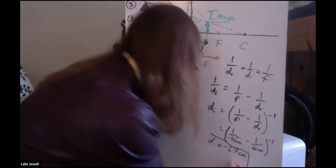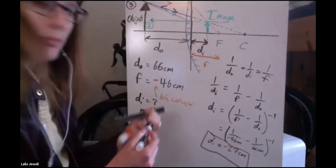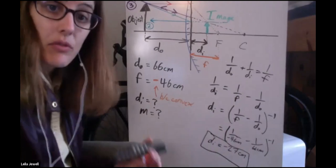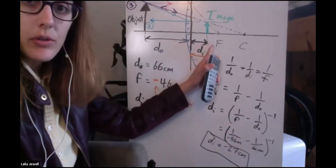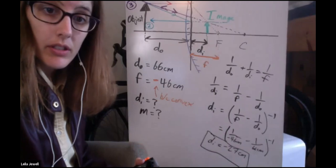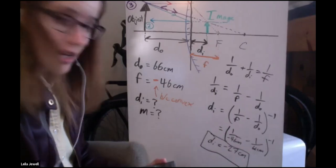d_i. The negative sign does matter here. That tells us it's a virtual image that has formed to the backside of the mirror. That's really good and pretty consistent.